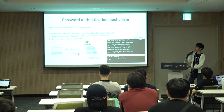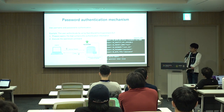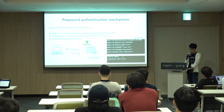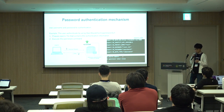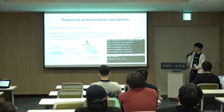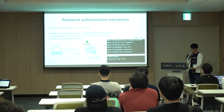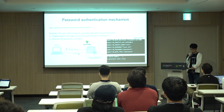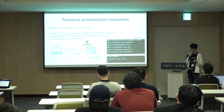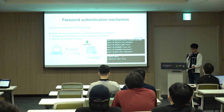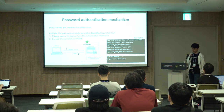First, I will explain the password authentication mechanism. This mechanism uses a username and password to authenticate a user. Here is an example of a user authenticating using the OpenStack client. The user prepares an OpenRC file that contains authentication information including username, password, and project name. The OpenStack command uses this information to issue a token. From Keystone's perspective, Keystone has a hashed user password in the database. If the password matches, authentication is successful and Keystone returns a user token.